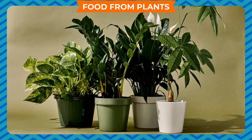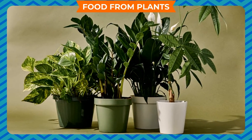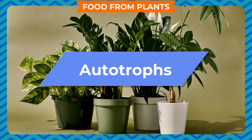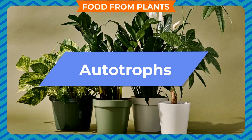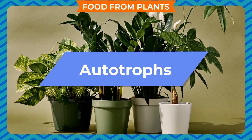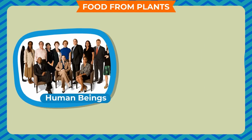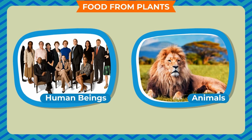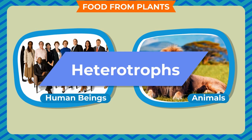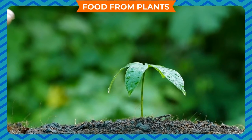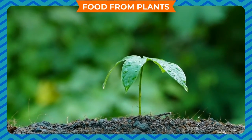Green plants are also called autotrophs as they make their own food. Non-green plants, human beings, and animals cannot prepare their own food and depend on green plants for their nutrition. They are called heterotrophs. Plants are also called producers.